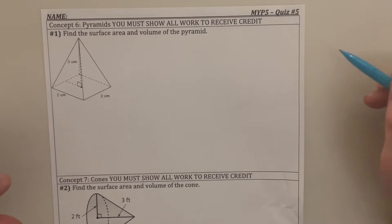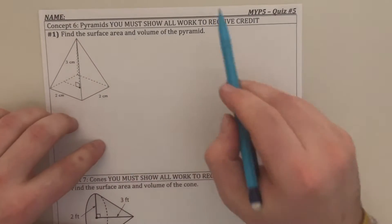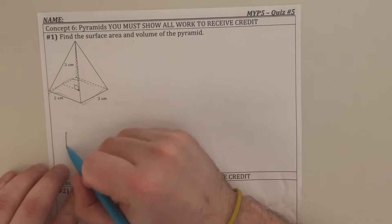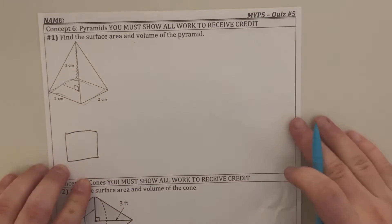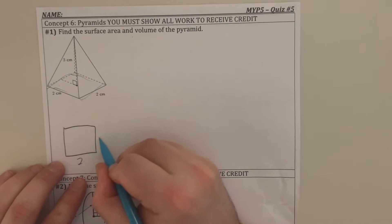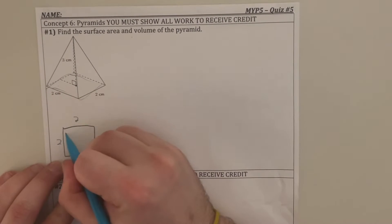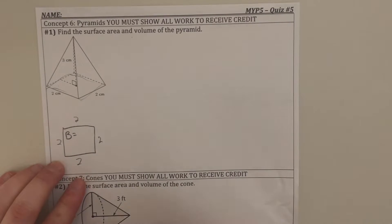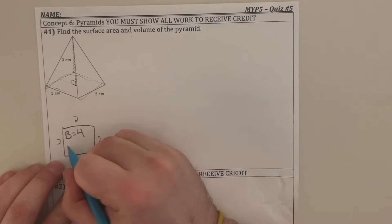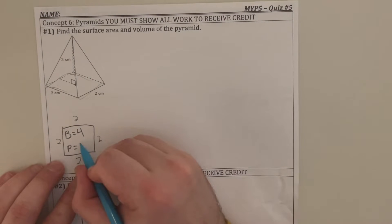We're working with quiz number five, and we're going to find the surface area and volume of this pyramid. Make sure you first trace the base, redraw the base. I have a square base since each of these side lengths are the same. That means I can find the area of the base, which is big B — I'm going to multiply the two side lengths together. The area of the base is going to be four, and the perimeter of the base is going to be eight.